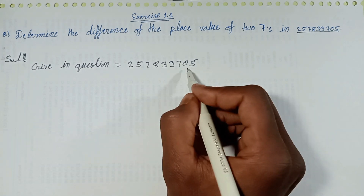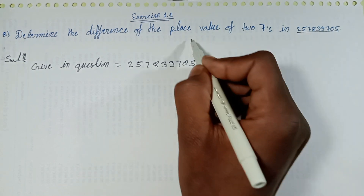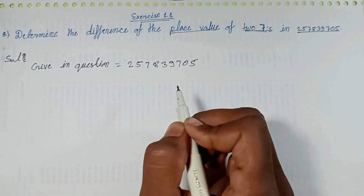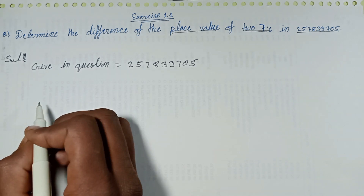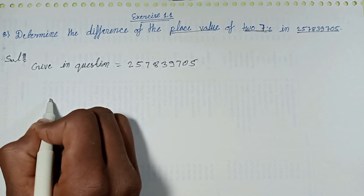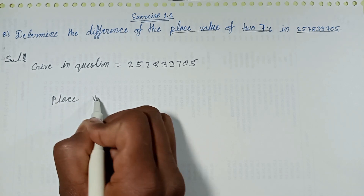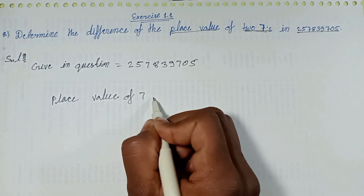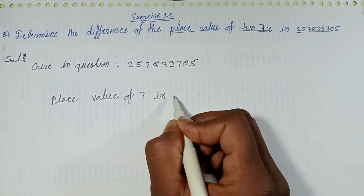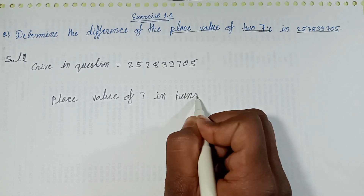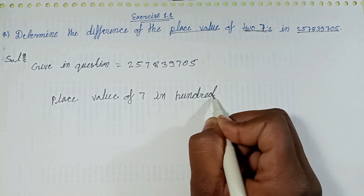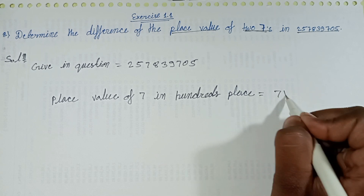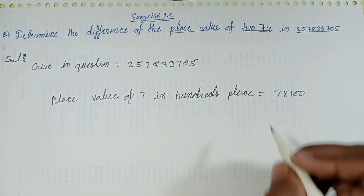Write down and find the place value of the two sevens. The first seven stands in the hundreds place. Place value of 7 in the hundreds place: 7 multiplied with 100 equals 700.